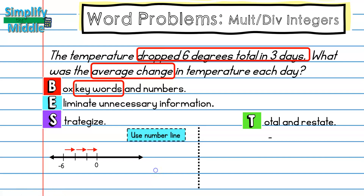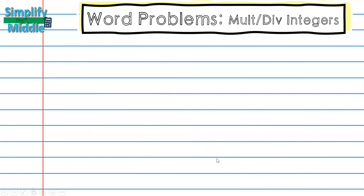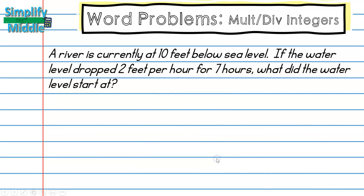The distance between each arrow represents the temperature change per day. I've essentially drawn a number line that shows division: negative six divided by three equals negative two. I restate: the average change in temperature is negative two degrees.